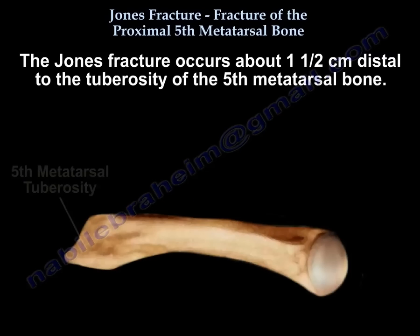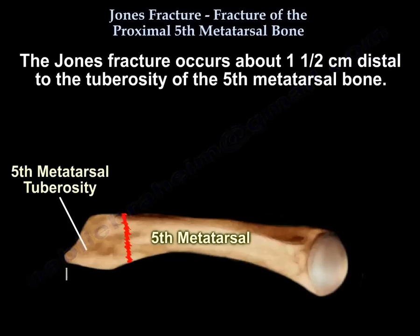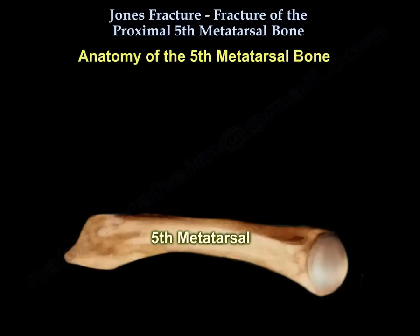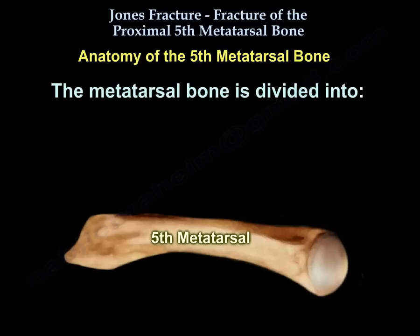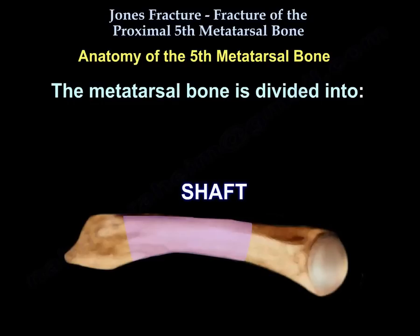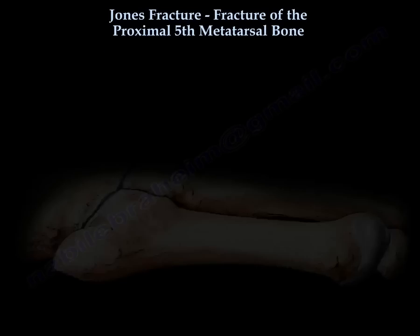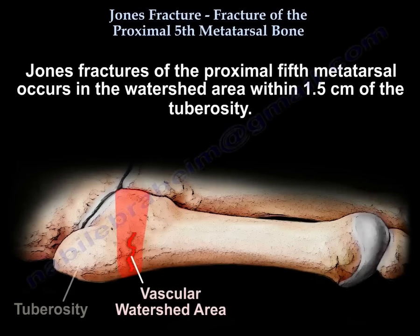Jones Fracture occurs about 1 to 1.5 cm distal to the tuberosity of the 5th metatarsal bone. The 5th metatarsal bone is divided into a head, a neck, a shaft, and a tuberosity. Jones Fracture of the proximal 5th metatarsal bone occurs in the watershed area within 1.5 cm distal to the tuberosity.